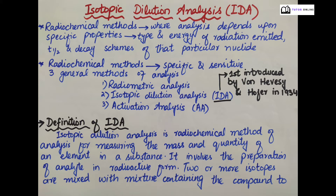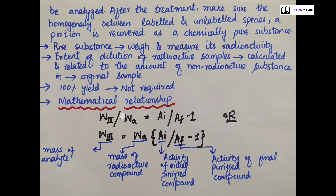IDA was introduced by von Hevesy and Hofer in 1934. Isotopic Dilution Analysis is a radiochemical method of analysis for measuring the mass and quantity of an element in a substance. It involves the preparation of analyte in radioactive form. Two or more isotopes are mixed with a mixture containing the compound to be analyzed. After the treatment, make sure the homogeneity between labeled and unlabeled species.